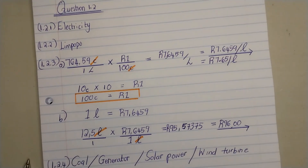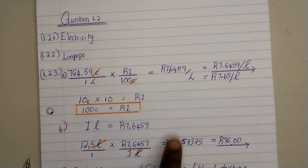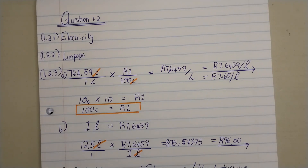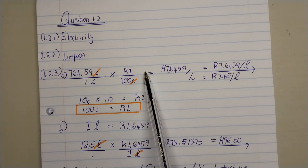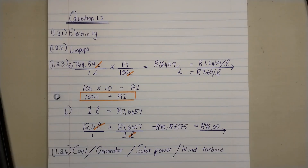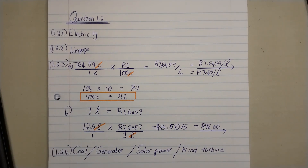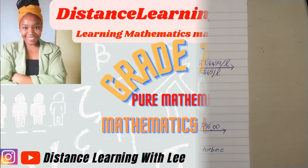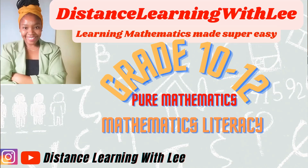Those are our answers for Question 1.2. As I mentioned, we had to interpret the data given to us and also do a bit of conversions. Remember: when dealing with conversions, write your values as fractions so you can see what units are cancelling. Also remember — multiply by what you want and divide by what you have. I hope you enjoyed the tutorial, and I'll see you on the next upload — Distance Learning with Lee, where I make learning mathematics super easy.